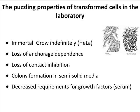We've known about transformation of cells for many, many years. Transformed cells have very different properties from normal cells. They grow forever, and one of the first immortal human cell lines made was HeLa cells from Henrietta Lacks — we talked very briefly about that story at the beginning of the course. They have lost anchorage dependence — they don't have to be attached to a monolayer, they can grow floating or in agar. They have lost contact inhibition, so they pile up on top of each other. And they have decreased requirements for growth factors.